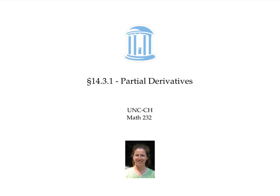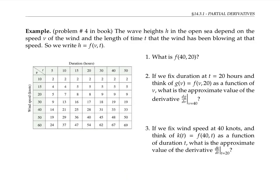This video is about partial derivatives. Let's start with a numerical example. In this example, the wave height h given in this table is a function of the wind speed v in knots, and the duration t in hours that the wind has been blowing at that speed.